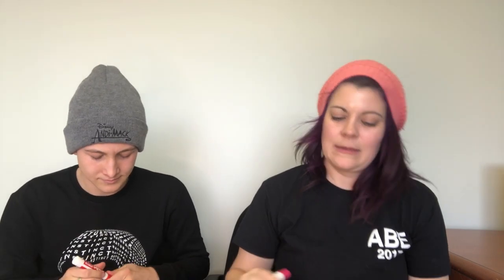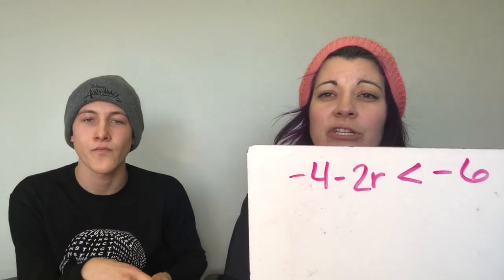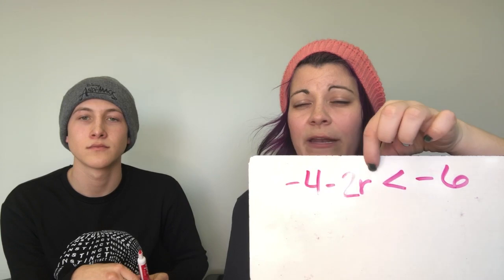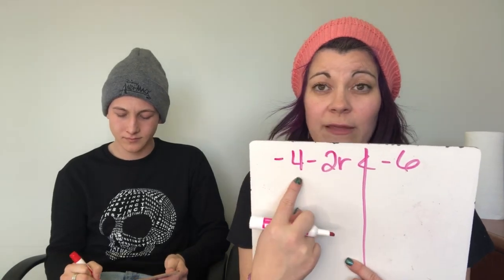Now for a two-step example: negative 4 minus 2r is less than negative 6. First, we want to isolate the variable, so we add 4 to both sides. That gives us negative 2r is less than negative 2, because negative 6 plus 4 is negative 2.